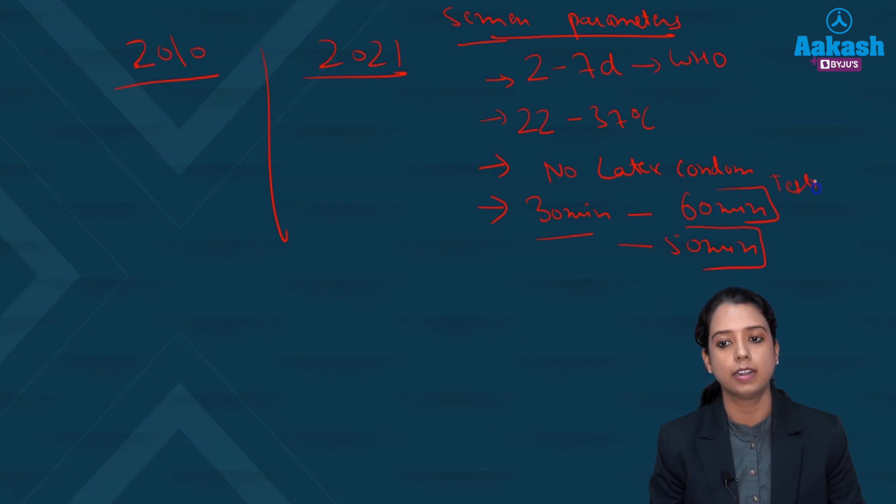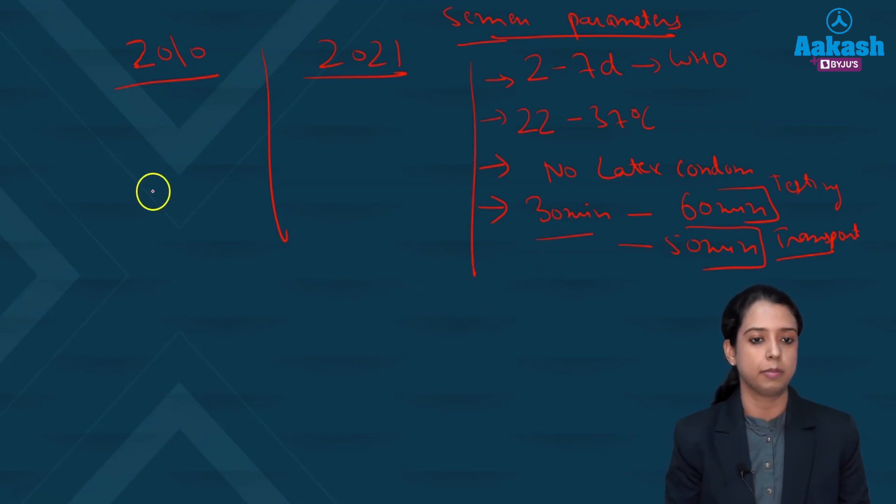So testing should start in this time limit and the transport should take not more than 50 minutes. So 30 to 50 minutes is your limit for semen sample transport. So this is the basic for collecting the specimen.